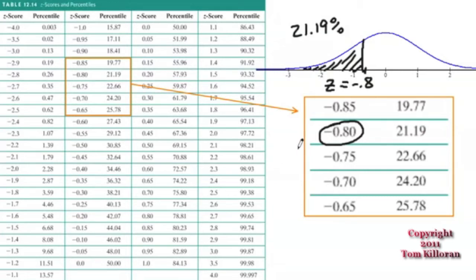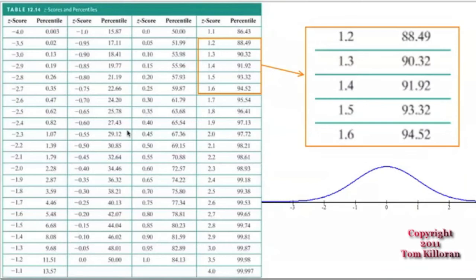So that means 21.19% of the data will be less than a z-score of negative 0.8. And that's all this table reads as. Let me just do another example of a different part of the normal table. I'm just going to pick z-scores between 1.2 and 1.6 and kind of blow them up over here to the side.